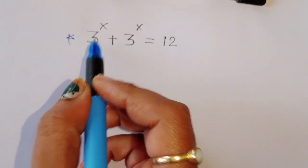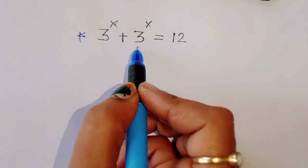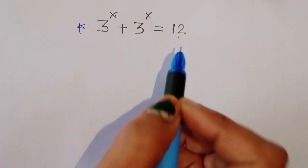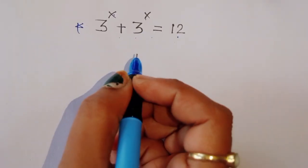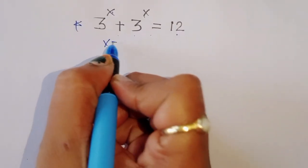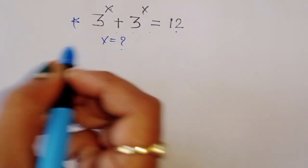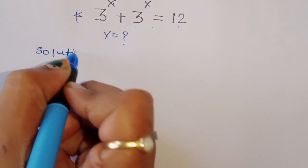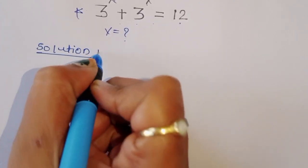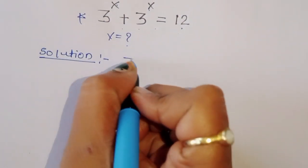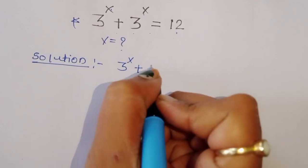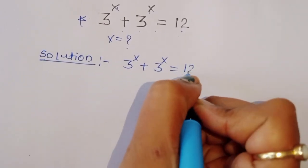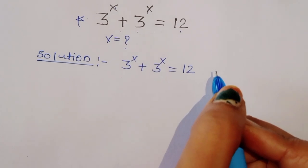Given 3 power x plus 3 power x is equal to 12. We have to find out the value of x here. So how we can find out the value of x? This is what is given here.